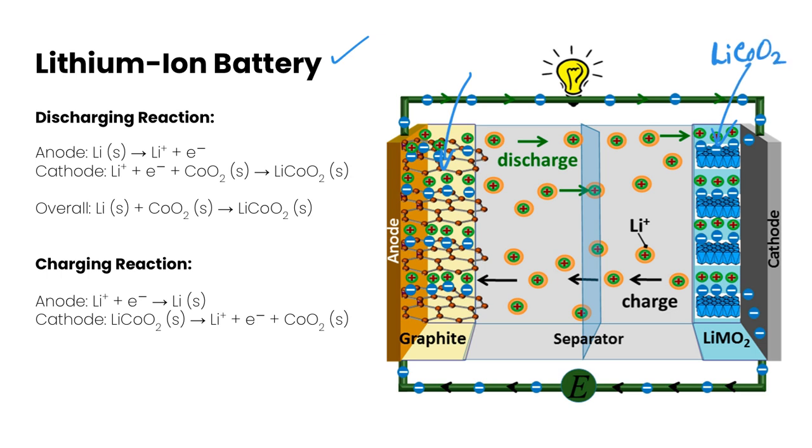In terms of the reactions that's happening the discharge reaction is the lithium is going to lithium plus plus an electron and then at the cathode the lithium plus plus an electron plus this CoO2 is making our LiCoO2. So overall we get this reaction happening here and so our discharge is going in this direction so this would be our discharge reaction.